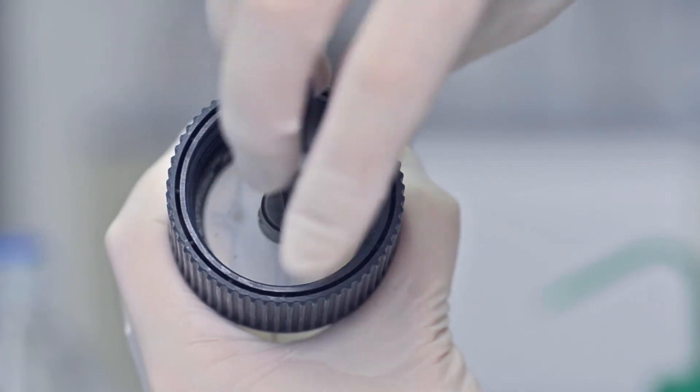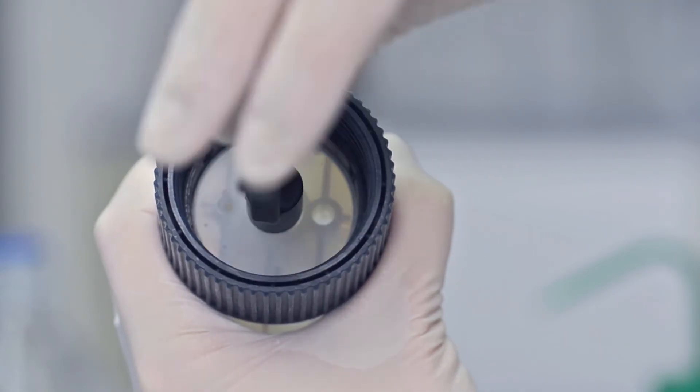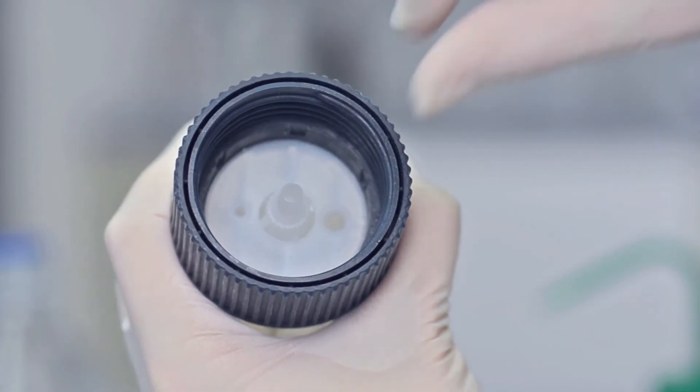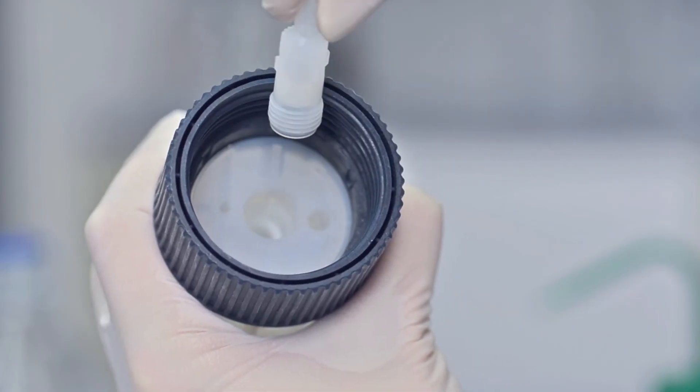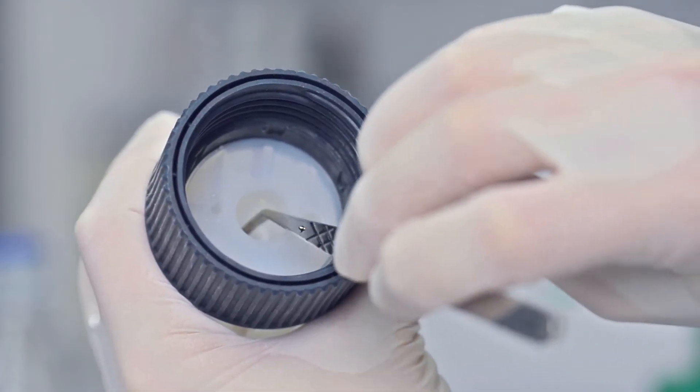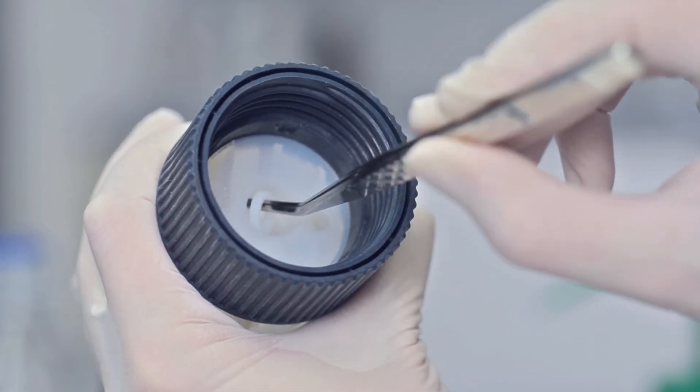Next, unscrew the filling valve with the mounting tool and remove the sealing ring with a pair of curved forceps.